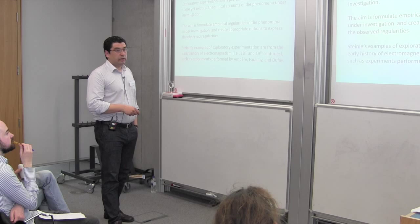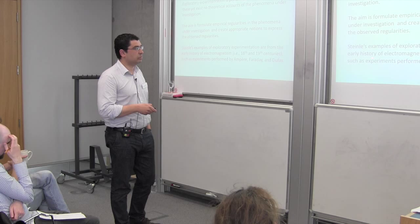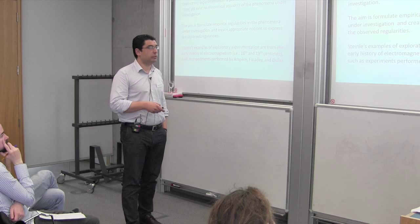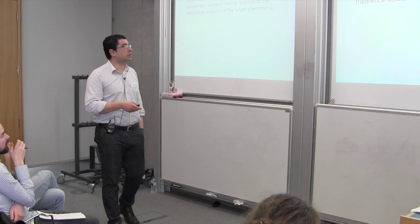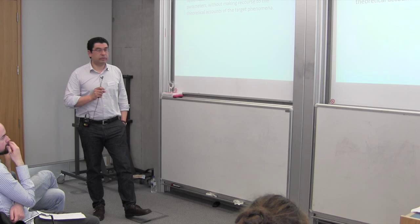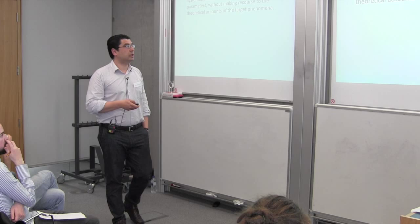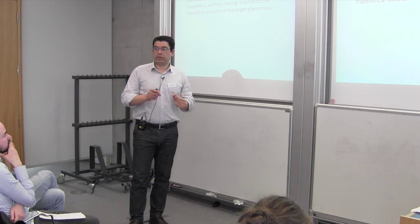He provides examples from the history of physics, particularly from the history of electromagnetism, with experiments performed by physicists such as Ampere, Faraday, and Dufay in the 18th and 19th centuries. In exploratory experiments, the main procedure is what he calls systematic variations of relevant experimental parameters, varied without making any recourse to theoretical accounts of the target phenomena, because there are none.